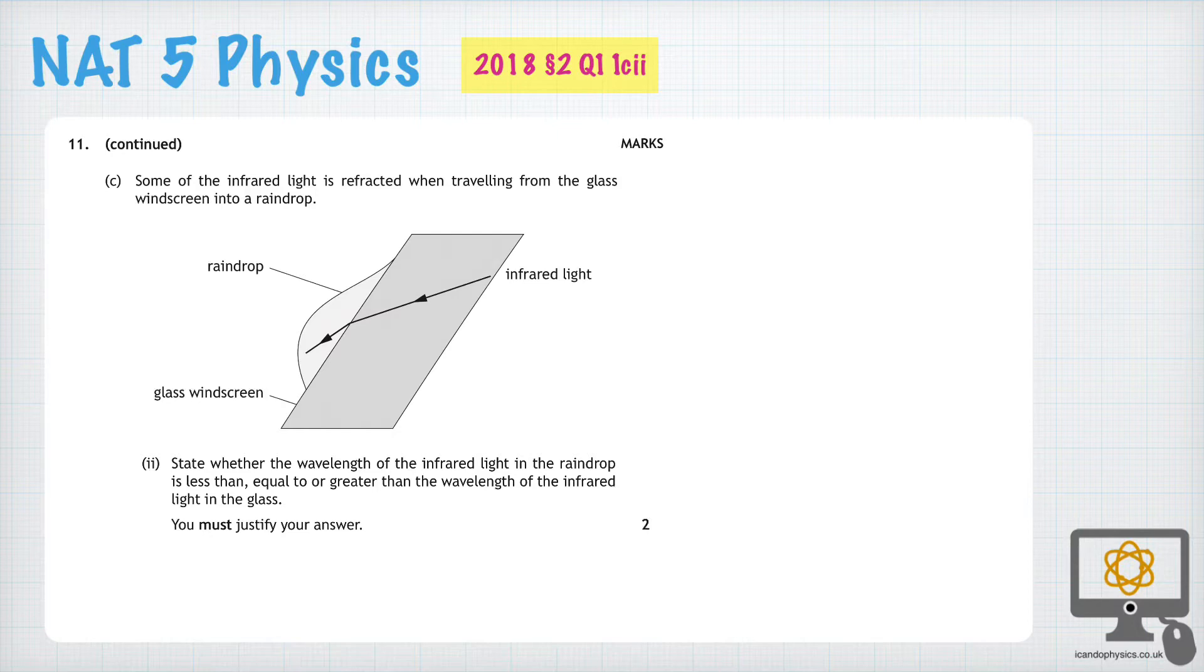The key thing here is that light is traveling from the glass into the raindrop, which is water. And so because it travels in that direction, there is a change of speed.